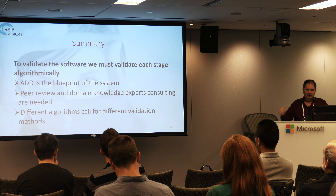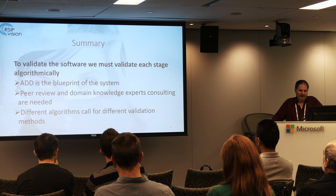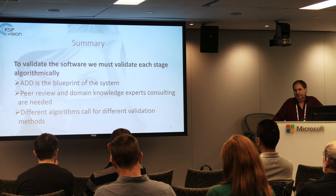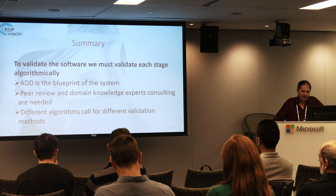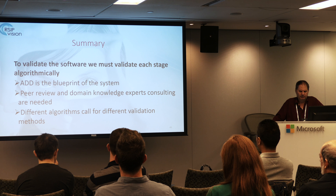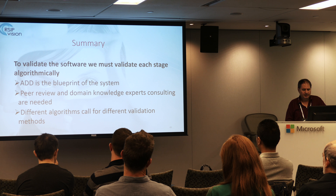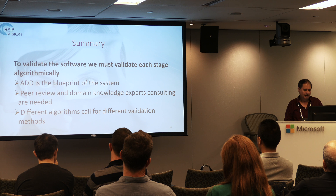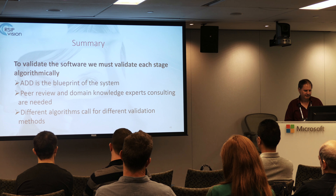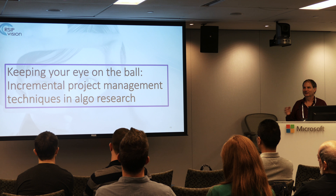As a project manager, try to find all the different scenarios, because tracking — though a very strong algorithm — has weaknesses in losing the target in different scenarios. To summarize: when we want to validate software, we must validate each step algorithmically. It is not enough to look at the final results. We use the ADD as the blueprint of the system, do peer review with domain knowledge to think about different cases, and different algorithms call for different validation methods and ways to consult your team on making the algorithm more robust.